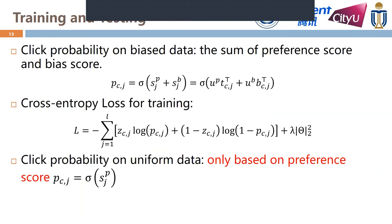Now let's talk about the training and testing method for our model. Given the user U and an impression IC, we can get the biased user embedding UB and the user preference embedding UP. We can also get the biased embedding BCJ and the content embedding TCJ for item J in IC. We decompose the click probability as the sum of the preference score and the biased score, and train our model with cross-entropy loss. Furthermore, since there are no biases in the uniform dataset, the user's click behavior depends only on user preference, so the click probability on uniform data is based solely on the preference score.